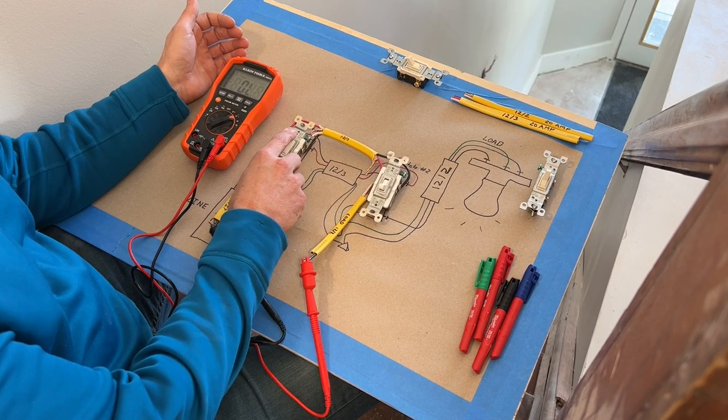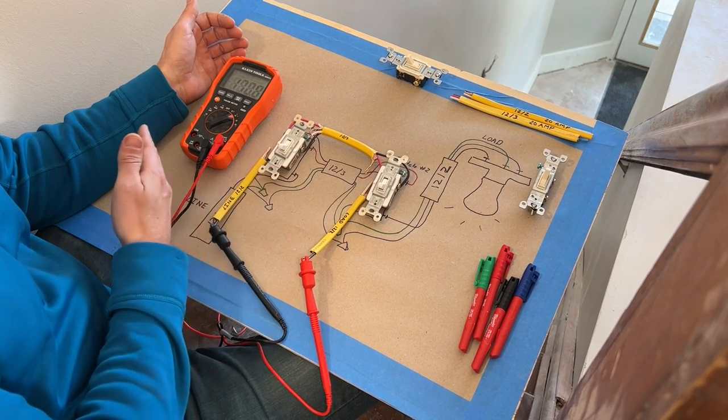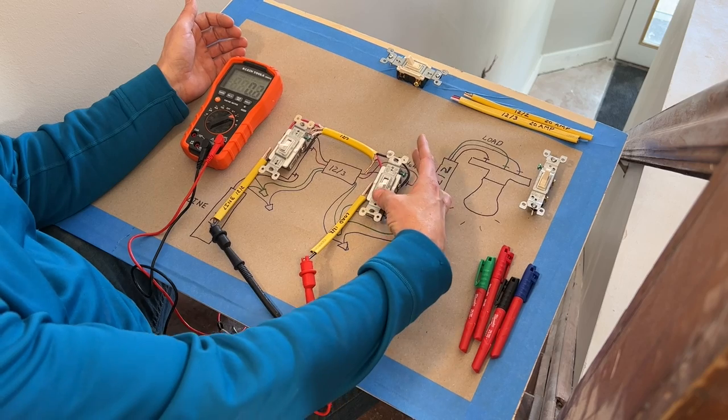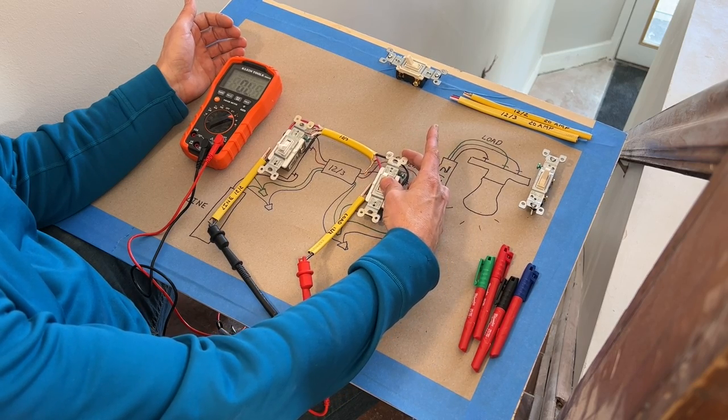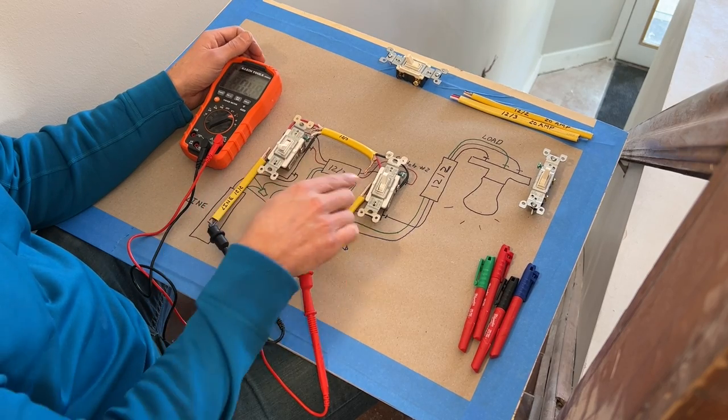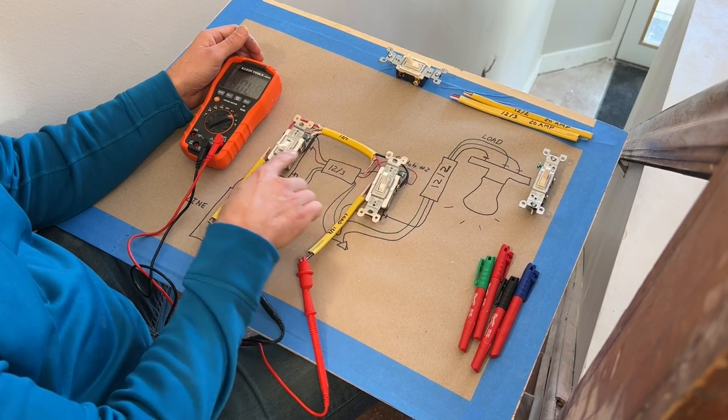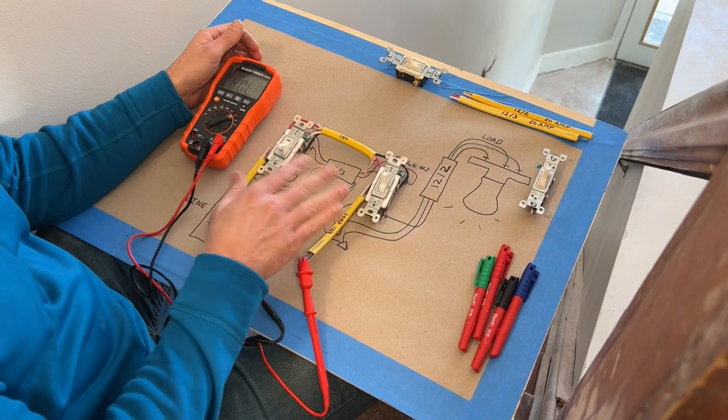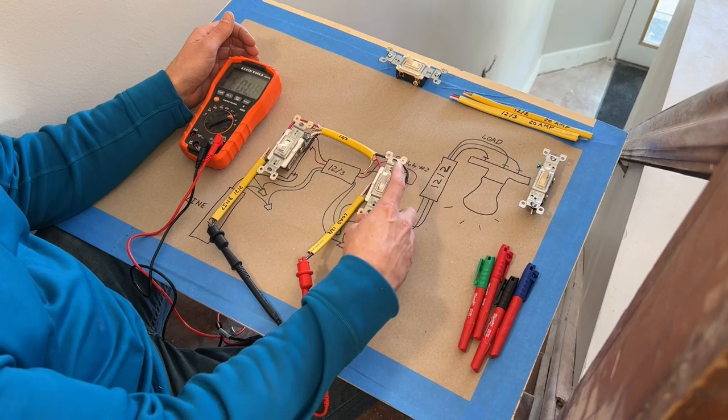I might want to turn it on, walk down the steps, and then turn it off. So the travelers are critical to creating the relationship between the two different switches where either one can turn the light on or off.